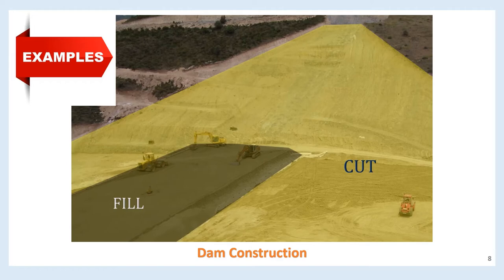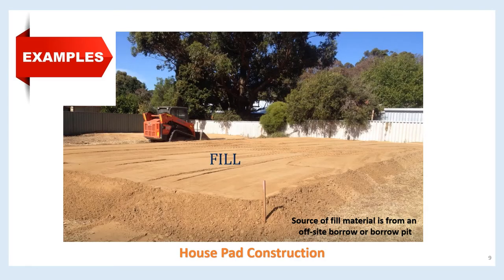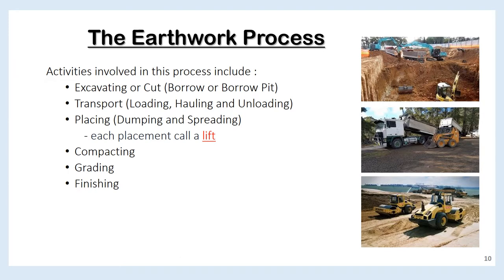The next photo illustrates the construction of an earth dam. You can see the entire area where the dam is to be placed has been cut and some soil removed. At the center of the cut zone, you can see fill operations in progress to build the dam. Here is another example — the construction of an earth pad to support a new home. This is entirely fill material brought in from another location. The original source location is called the borrow area or borrow pit.